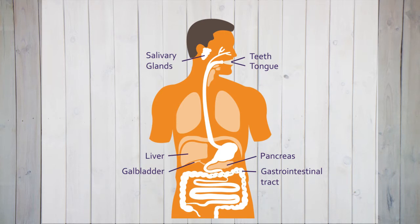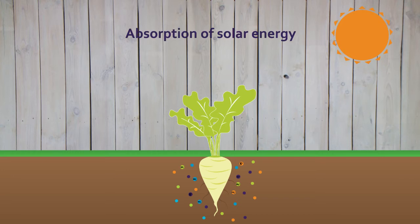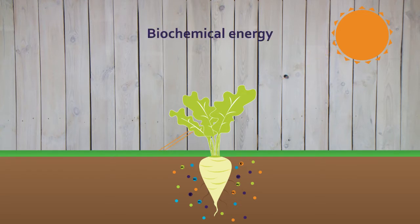Molecules and components that are not useful are excreted via urine and feces, or stored in, for example, fat. But like humans, plants need to eat and drink. Unlike humans, plants do not have an internal system to digest food. Plants obtain energy from absorption of solar energy, and are able to convert solar energy into biochemical energy and store it. This phenomenon is called photosynthesis.